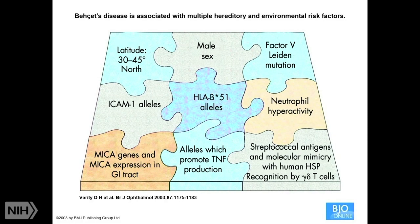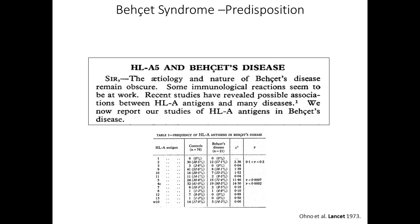You can see here the different hereditary and environmental risk factors for the disease: HLA-B51, male sex prevalence, or latitude — especially between 30 and 45 degrees north — is one of the other risk factors. Some studies also showed an association between streptococcus and HSP recognition by T cells, which can flare the disease. We know very well the familial aggregation, and the HLA-B51 association with the disease was described in 1973.